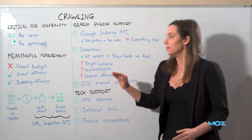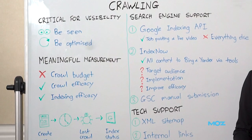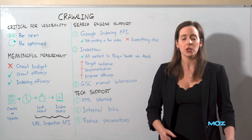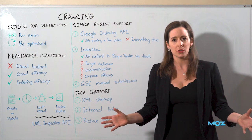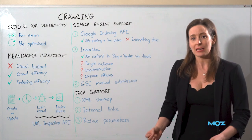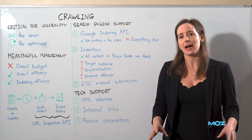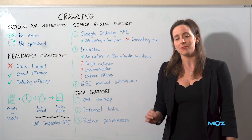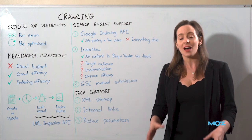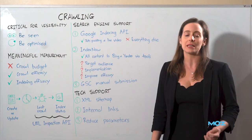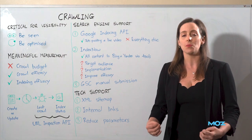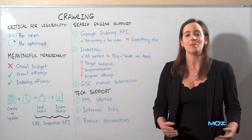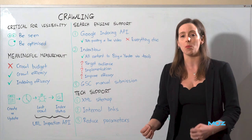We need to talk about measuring crawling in a really meaningful manner. When you log into Google Search Console and go into the crawl stats report, you see the total number of crawls. I take big issue with anybody who says you need to maximize the amount of crawling, because the total number of crawls is absolutely nothing but a vanity metric. If I have 10 times the amount of crawling, that does not necessarily mean I have 10 times more indexing of content that I care about. All it correlates with is more weight on my server, and that costs more money.